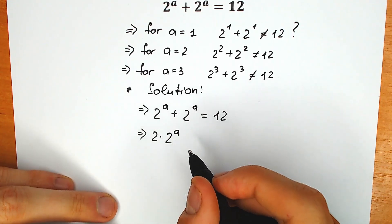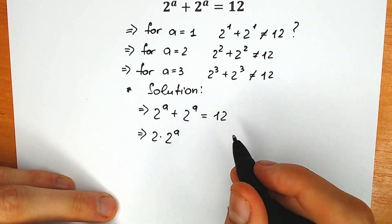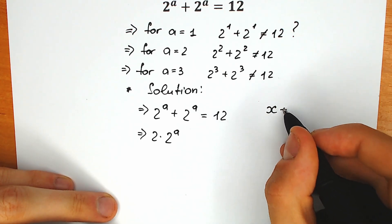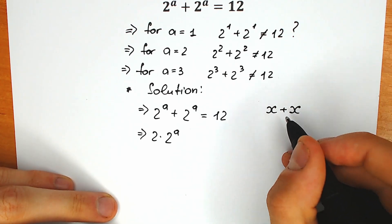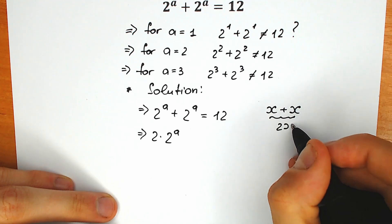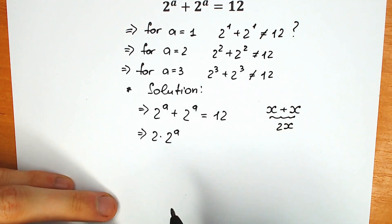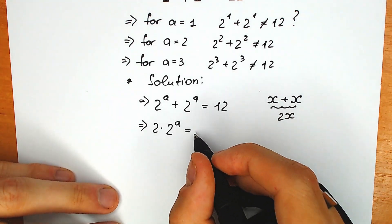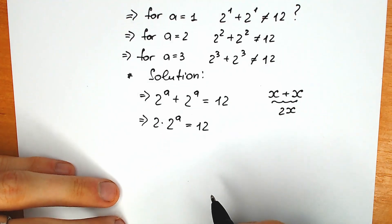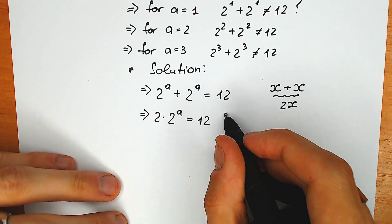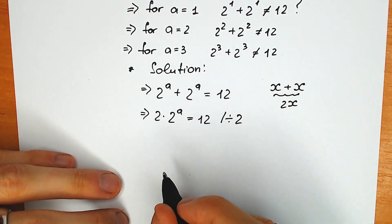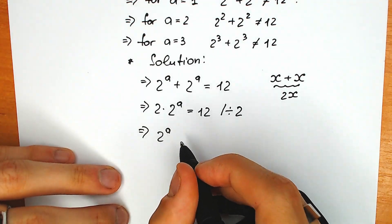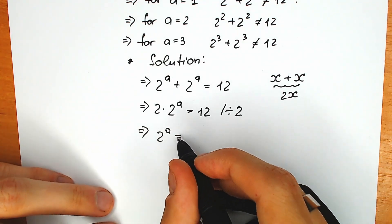A lot of students might be asking how we can add it. If 2 to the power a is x, then we add x one more time and we have 2x. So we have 2 times 2 to the power a equal to 12. Right now we can divide both sides by 2. From here we have 2 to the power a is equal to 6.